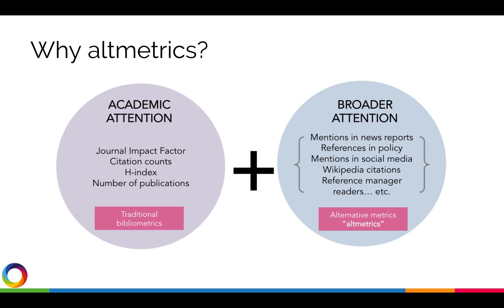Altmetrics, or alternative metrics, are complementary to citation-based metrics like the H-Index and Journal Impact Factor, an attempt to measure both the volume and nature of attention that research has received online.